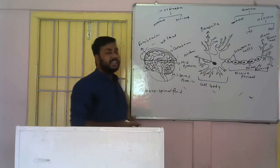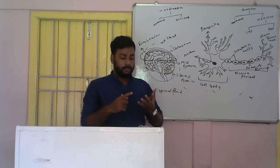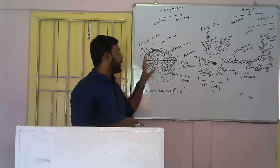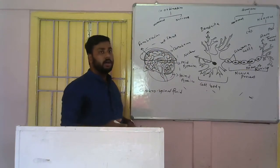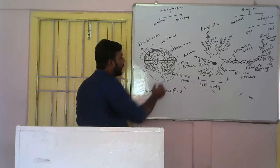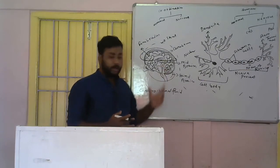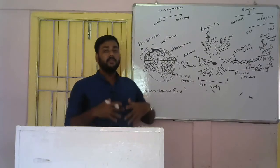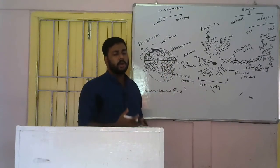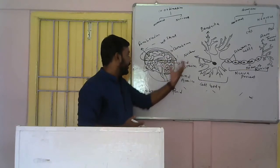The forebrain is also the reception point of all the sense organs — skin, nose, eyes, ear, and tongue. All the senses are processed in the forebrain. Next is the midbrain. The midbrain controls all the involuntary actions of the body with the help of the hindbrain. It does not control involuntary movements independently; it takes the help of the hindbrain to manage involuntary activities.